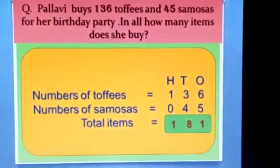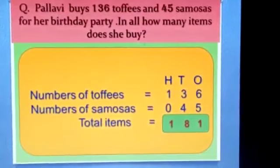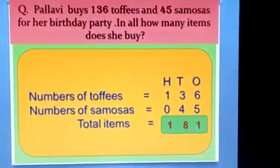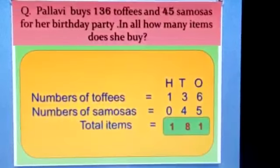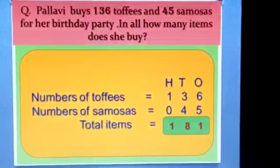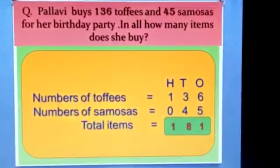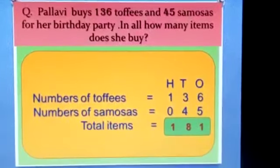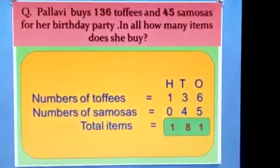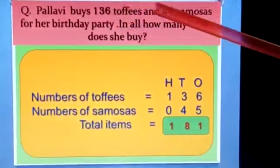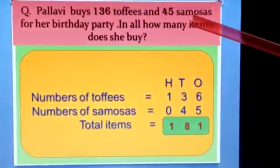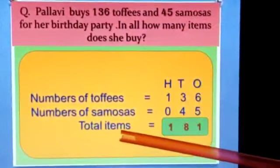So when we have such type of words like in all, how many items are there, that means I need to find out the total number of toffees and samosas altogether. That means I need to add 136 toffees and 45 samosas altogether to get the total items.